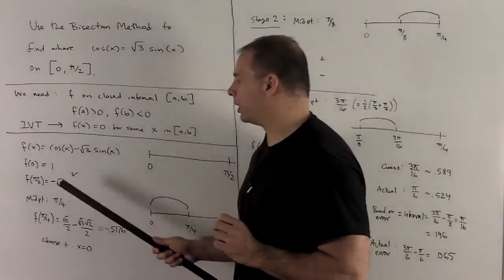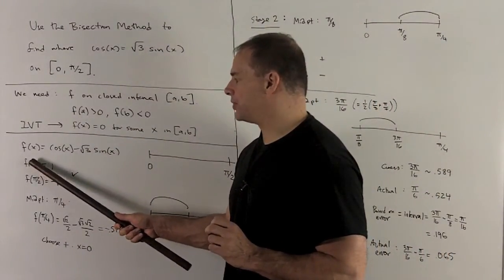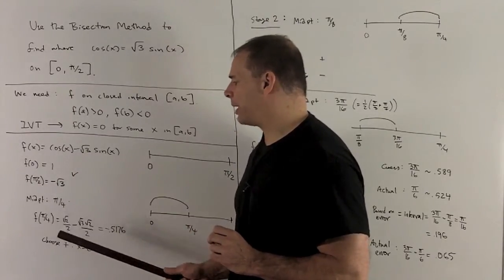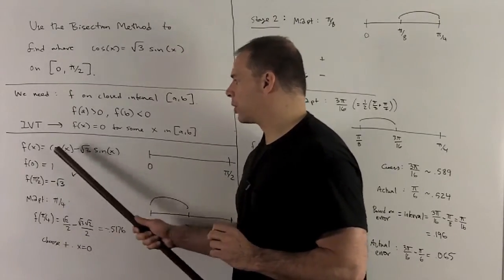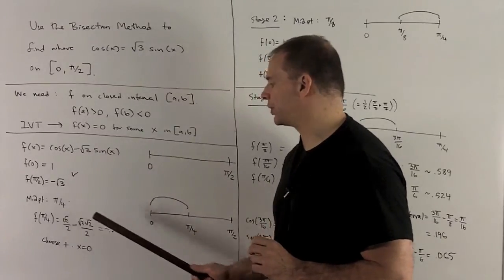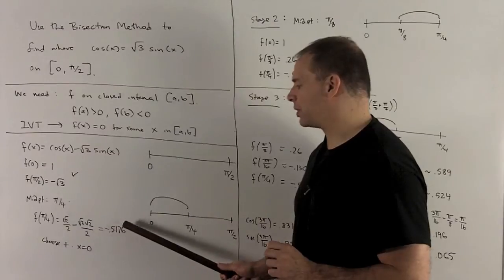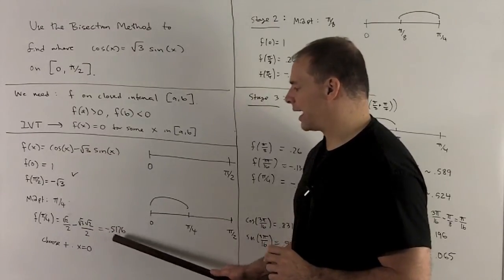So what's our midpoint? I'm going to take midpoint from zero to π/2, that's going to be π/4. And we figure out what the value of π/4 is. For cosine sine, that's going to be √2/2. So if I crunch this with the calculator, I'm going to get -0.5176. That's a negative value.